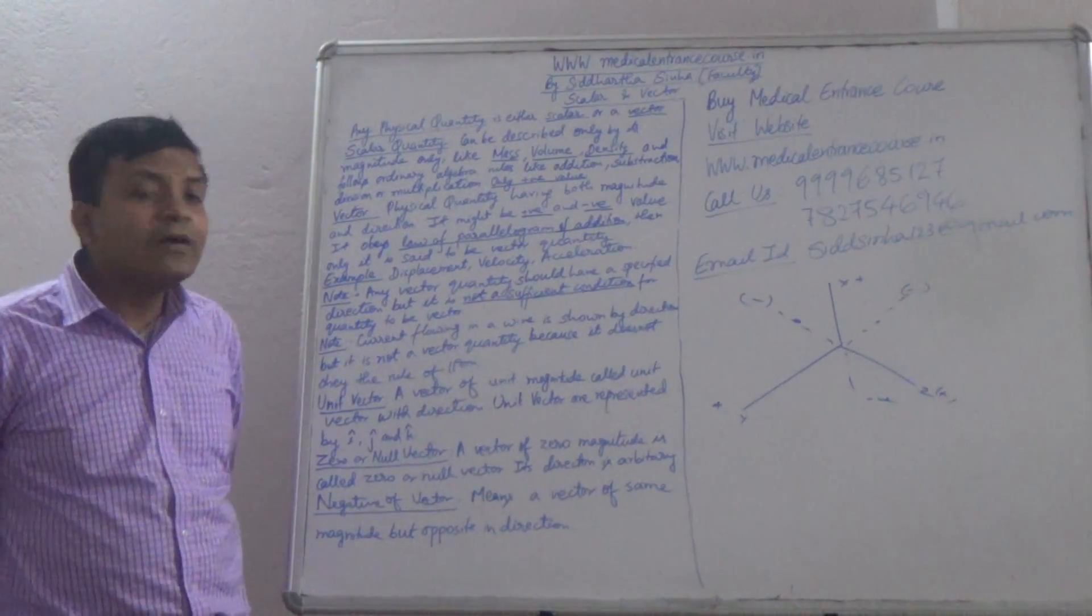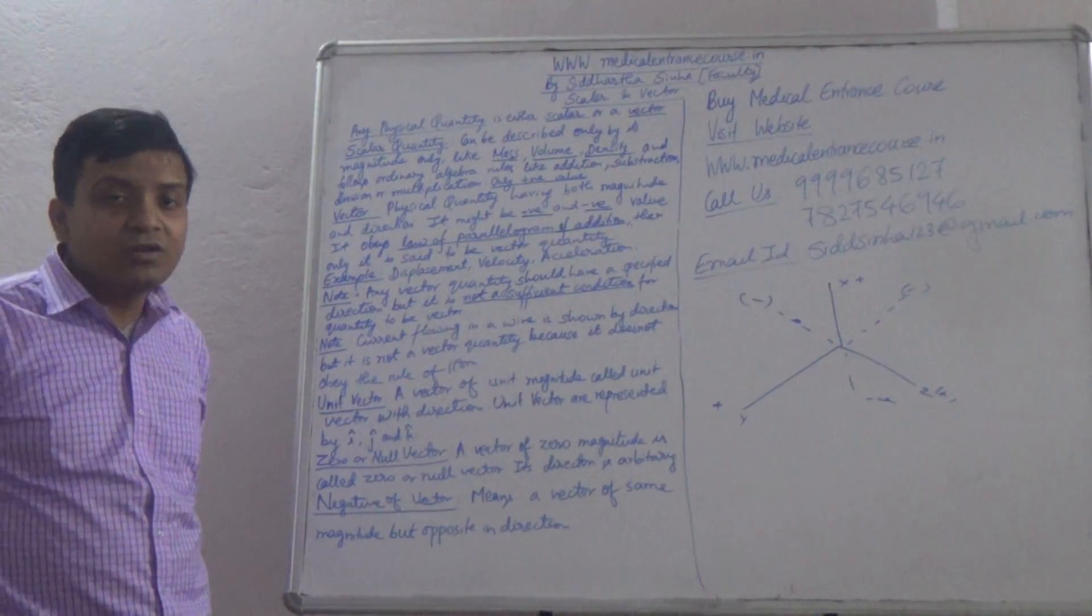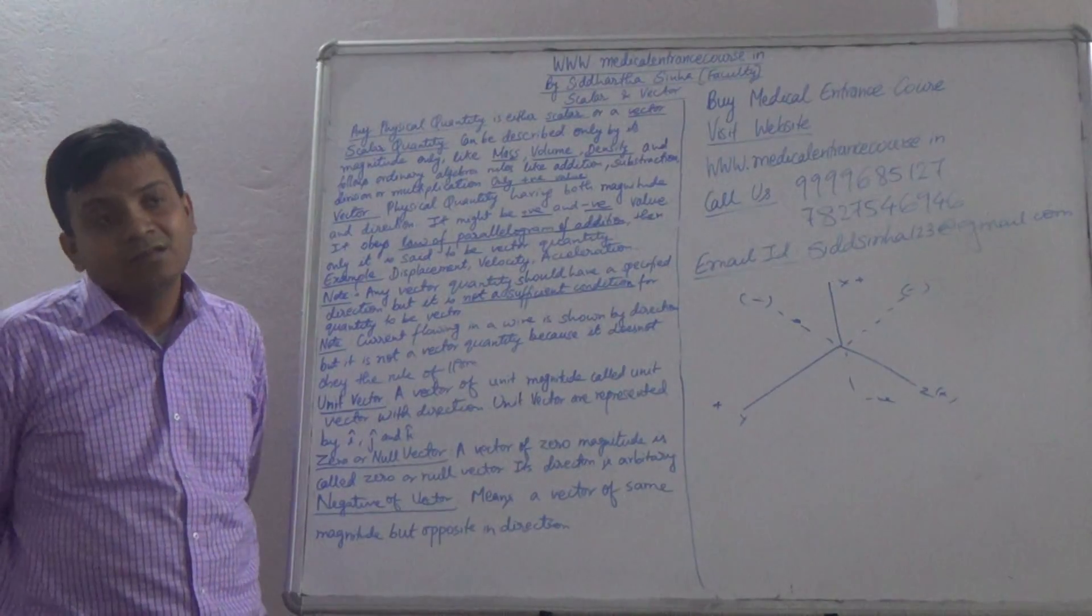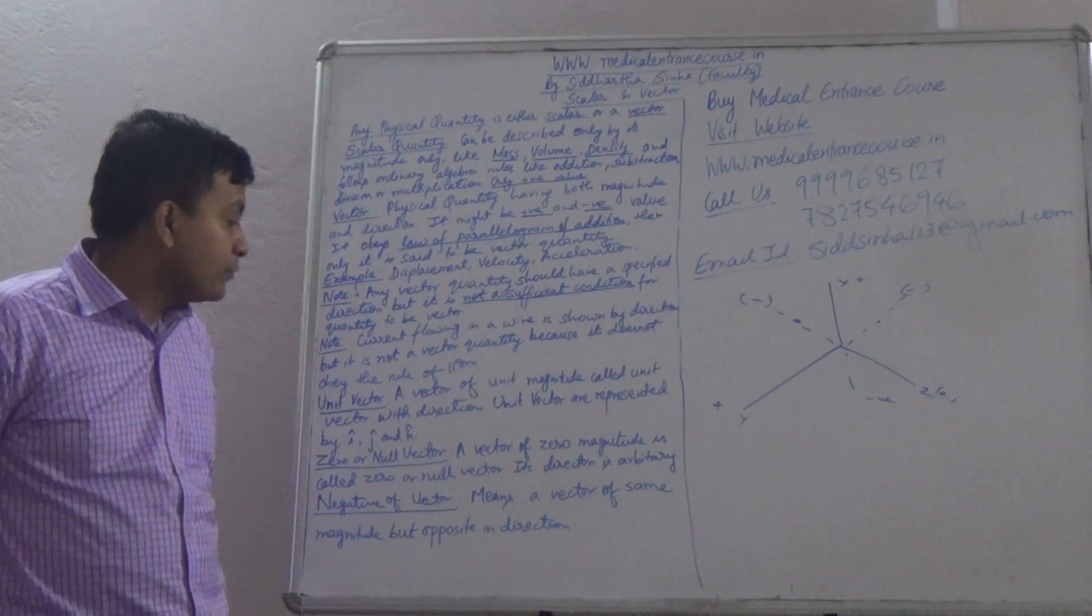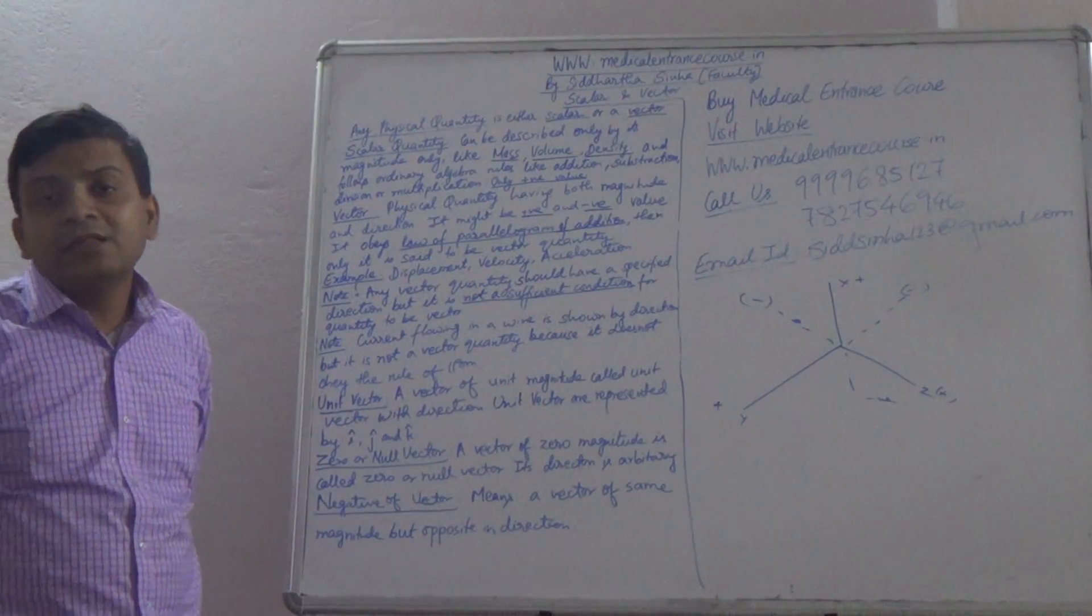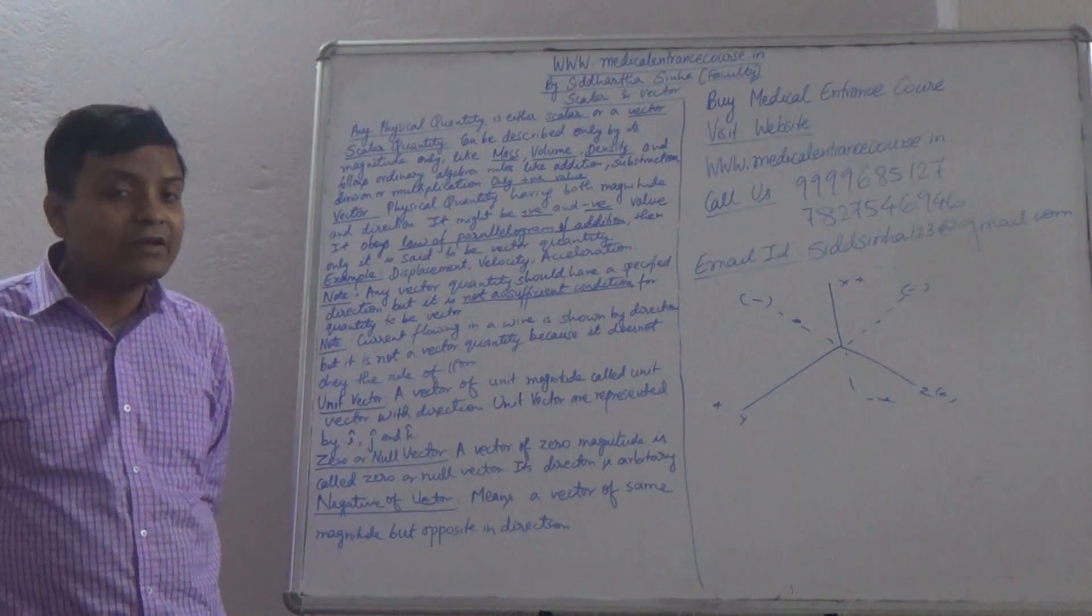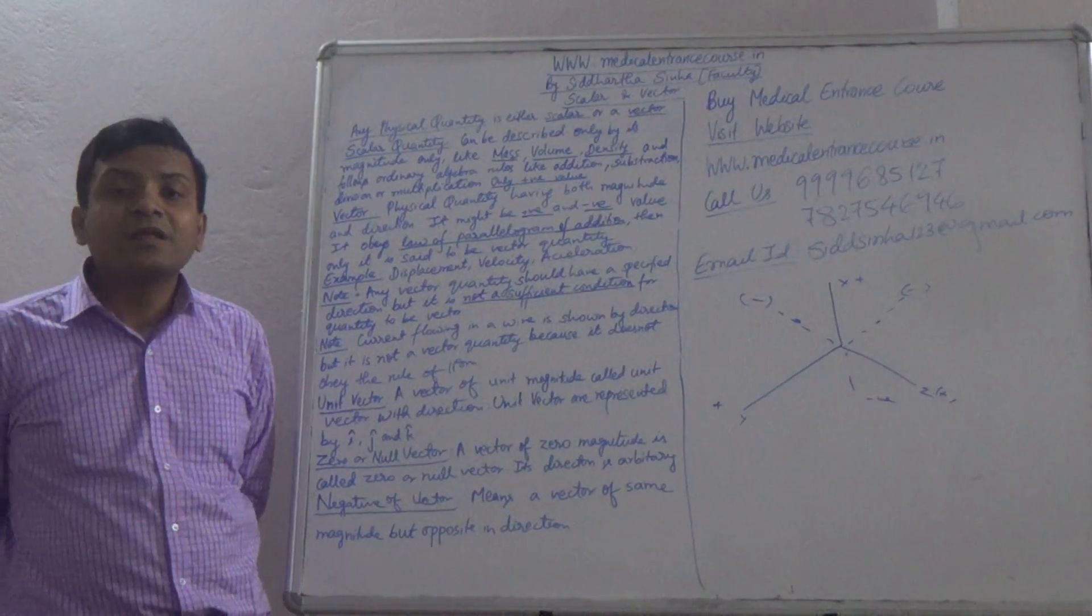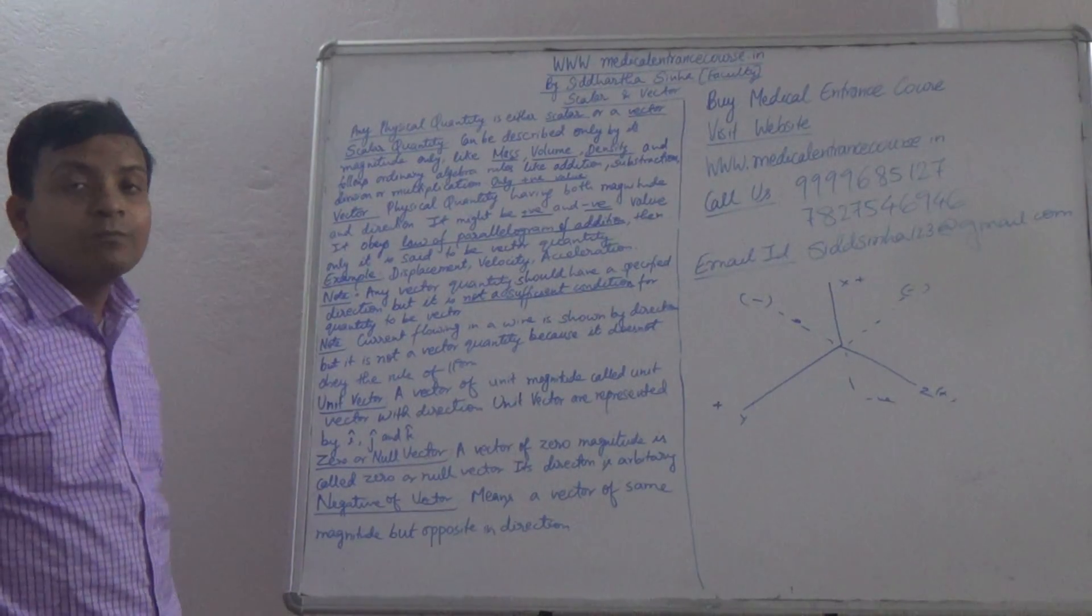Now not any vector quantity should have a specified direction, but only this condition does not satisfy to be vector, because it must follow the rule of parallelogram. Note that current is having its own direction. Current always flows in a direction, but that direction doesn't support it to be a vector quantity because it doesn't follow the rule of parallelogram.